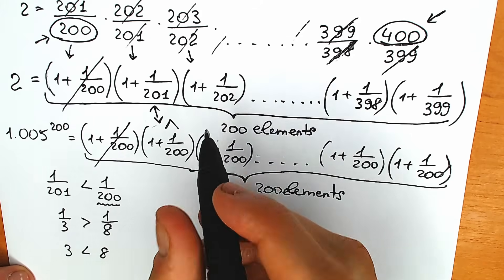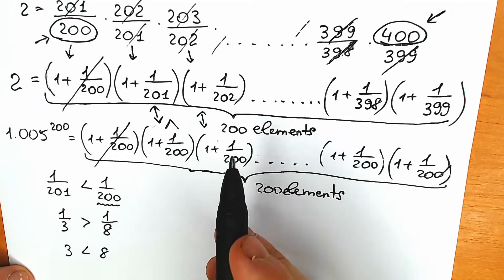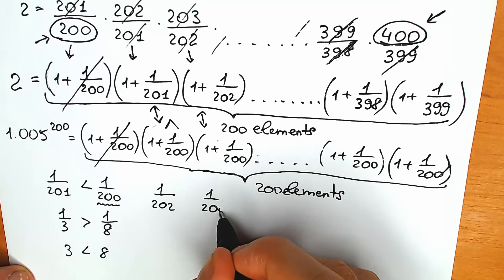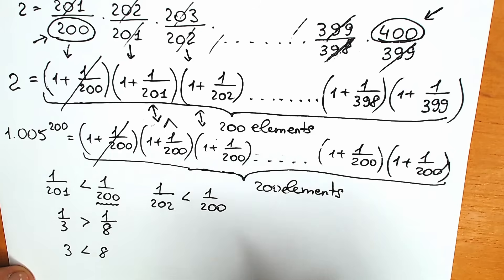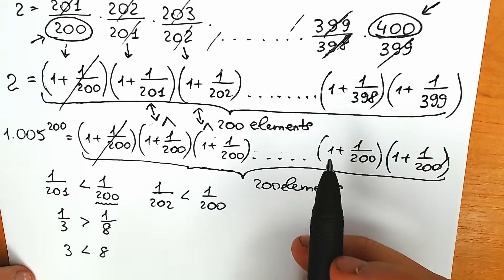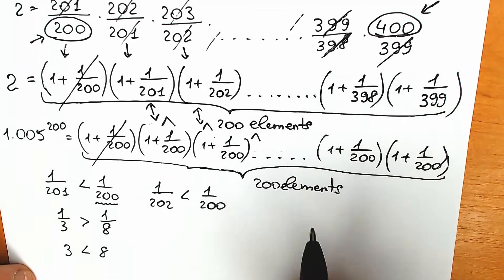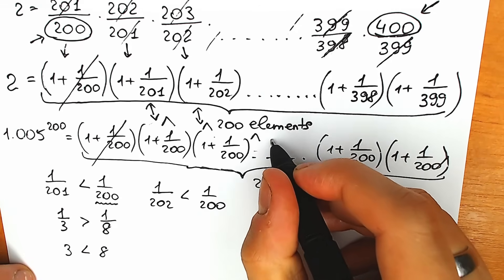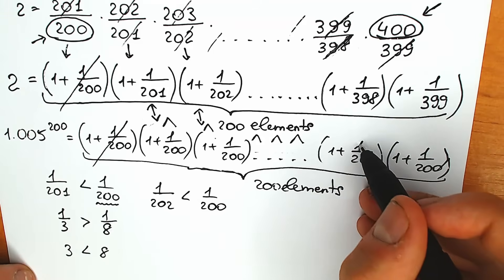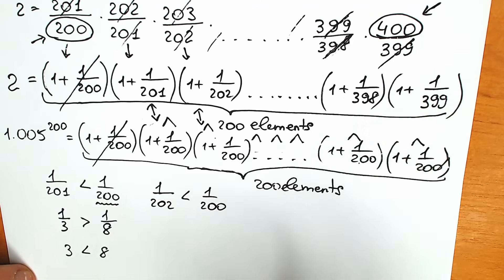Let's test this once more. The third parentheses: we compare 1 over 200 with 1 over 202. Of course, 1 over 200 is greater. The fourth: 1 over 200 versus 1 over 203 — this one is greater. And continuing: 204, 205, all the way up to the previous one with 1 over 398, and the last one with 1 over 399. Each time, 1 over 200 is greater, so each parenthesis in 1.005^200 is greater than the corresponding one in 2.